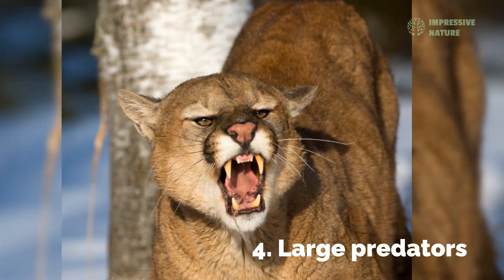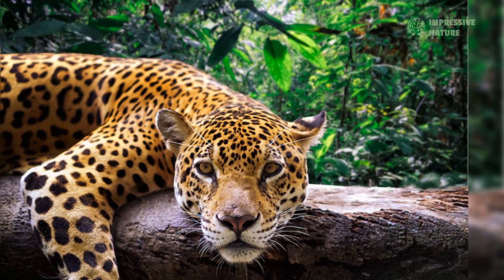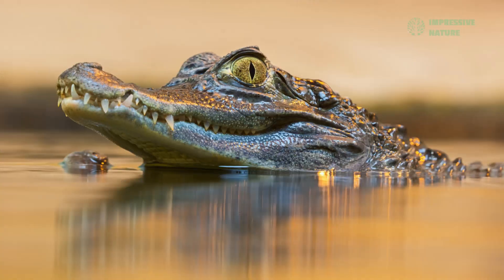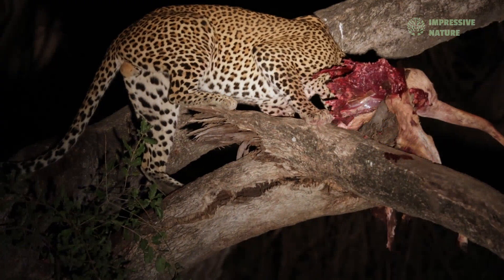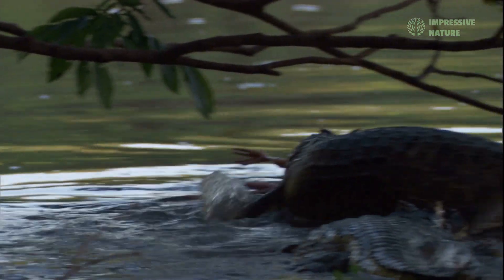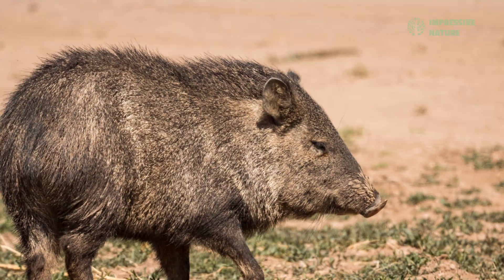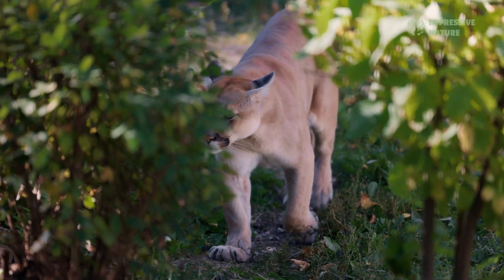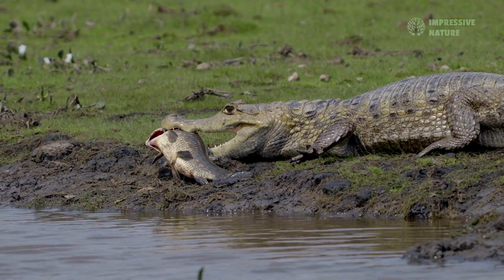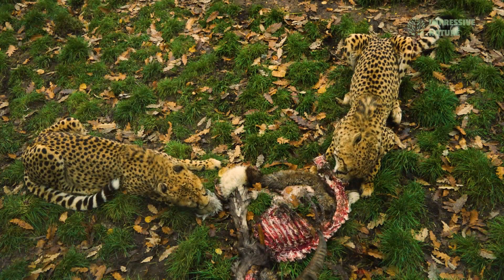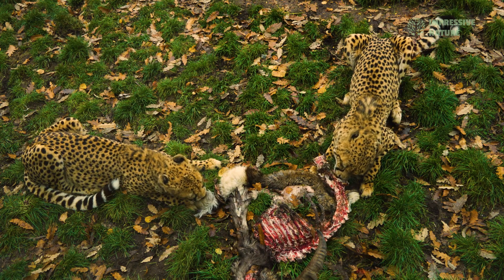4. Large predators. The apex predators of the Amazon rainforest, such as jaguars, pumas, anacondas, and caimans, occupy the top of the food chain. These powerful hunters prey on a wide range of animals, from capybaras and peccaries to deer and smaller predators. By controlling the populations of herbivores and smaller predators, apex predators help maintain a balanced ecosystem. Their presence ensures that plant life is not overgrazed, supporting the overall health and diversity of the forest.